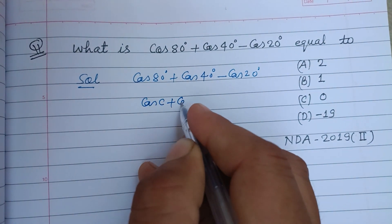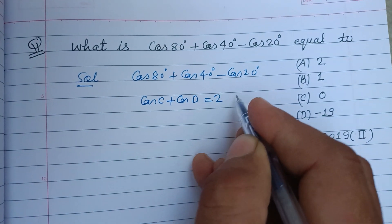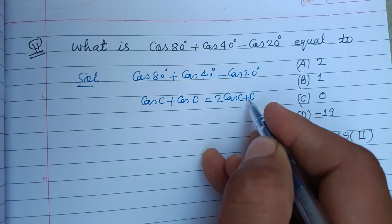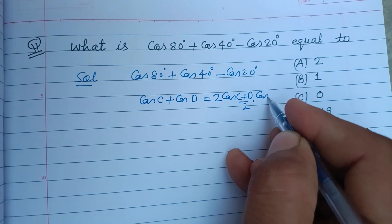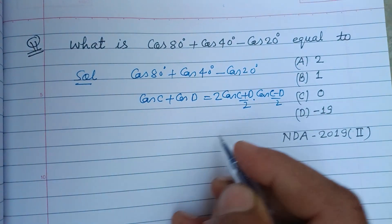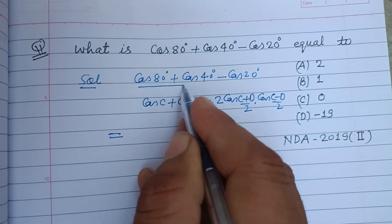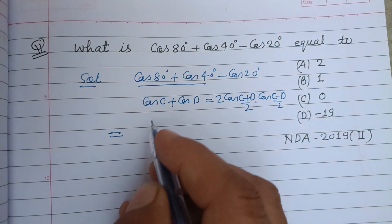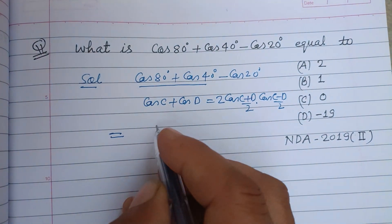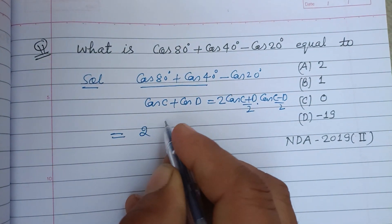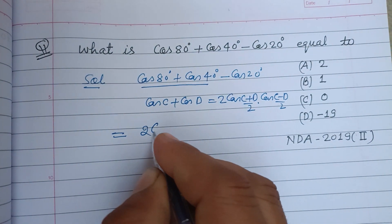And we know that cos C + cos D equals 2 cos((C + D)/2) into cos((C - D)/2). So using this in these two terms, cos 80° + cos 40° becomes 2 cos((80° + 40°)/2) into cos((80° - 40°)/2).